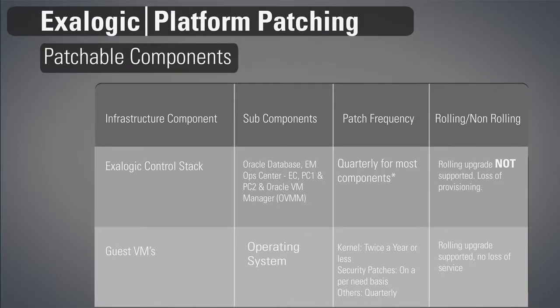For the Exilogic control stack, you have the Oracle database, EMOpCenter with the enterprise controller, two proxy controllers, and Oracle VM Manager. You get quarterly patches for most of these components. Post-2.0.6, you'll see fewer patches coming for the Exilogic control stack as we're moving towards a newer architecture. You can patch the control stack rolling. For guest VMs, all patching is the OS — kernel is twice a year or less, security patches are on demand per-need, and others are quarterly. Rolling and non-rolling patching are both supported.